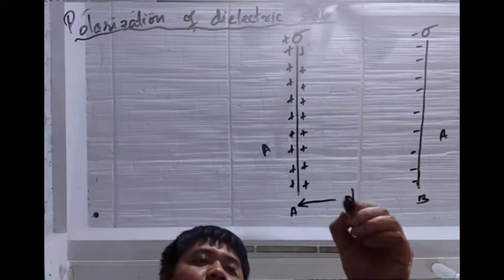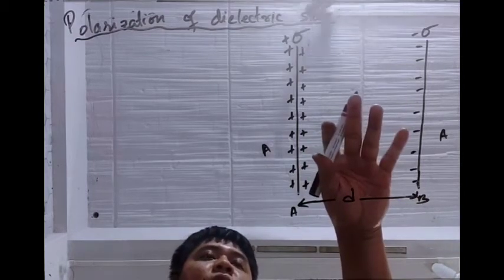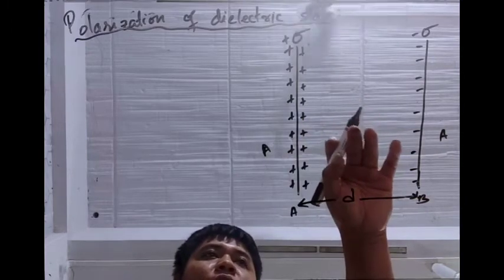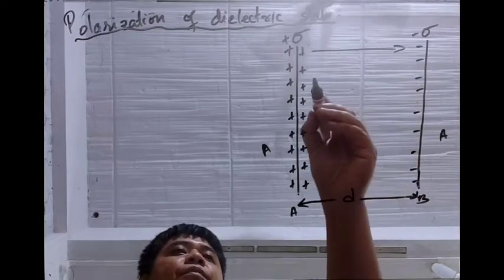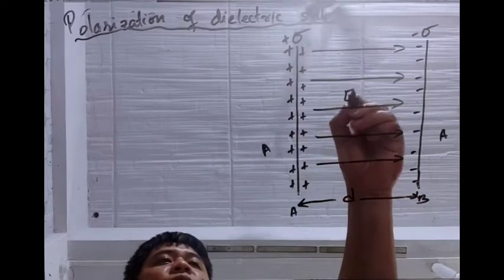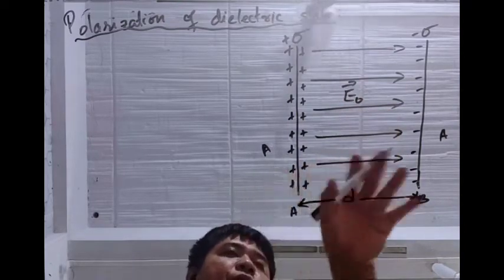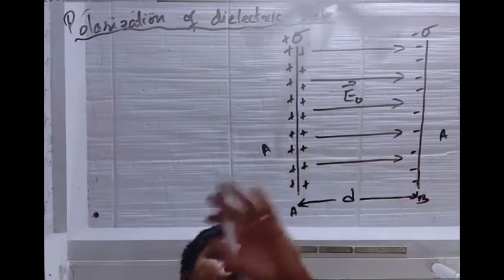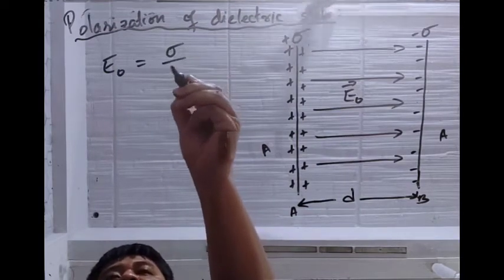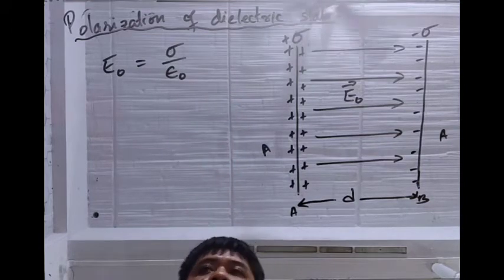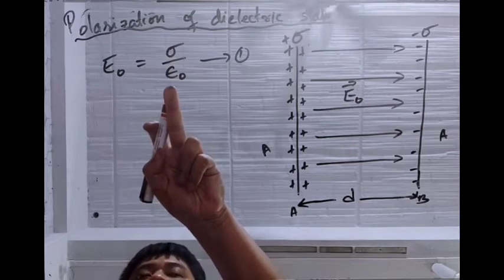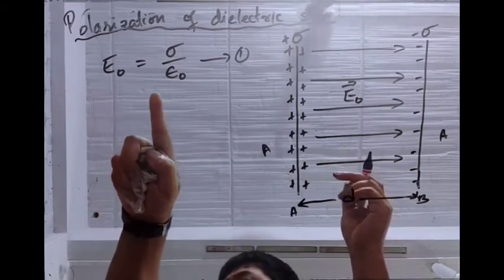Let us consider the distance between the two plates is D, and there is nothing between the two plates — it means it is vacuum. So there will be an electric field; these are electric lines of force. We have a uniform electric field E₀ inside the space between the two plates. The magnitude of E₀ is given by surface charge density divided by epsilon naught — let it be equation one. This is the surface charge density of either plate and this is the permittivity of free space, as proved in Gauss's law.